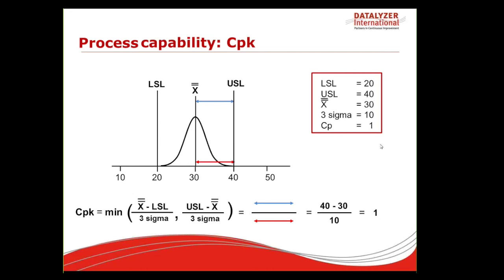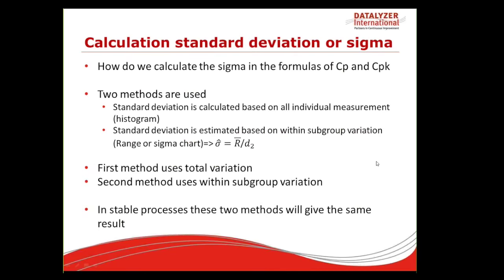When the process is exactly centered, it doesn't matter whether we look at the upper or lower specification limit to find the critical one, because X-bar is exactly in the middle. In this example using the upper side: (40 − 30) / 10 = 1, which equals the CP value. So if the process is exactly on target, CPK equals CP. Now, in the calculations we divide by 6 times the standard deviation — but how do we calculate the standard deviation for the capability index?